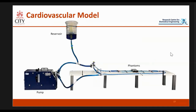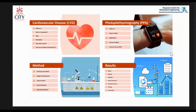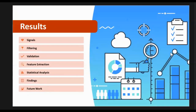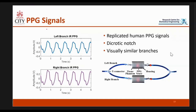This is what it looks like in practice — the final product with the pump, the reservoir, and our phantoms. The initial findings were more of a validation study, just to see if we can obtain human-like PPGs from both sides and whether they are similar. These are examples of the infrared signals. We successfully obtained human-like PPG with a dicrotic notch as well, and they look visually similar — so that was good news.